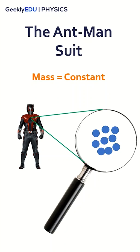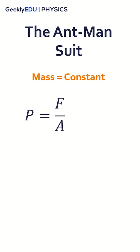But the problem is not the size, but the pressure. Since pressure is the force over the area on which it is applied, and force in this case is the mass of Ant-Man times the gravity acceleration, when the mass is constant and we reduce the area, the pressure increases.